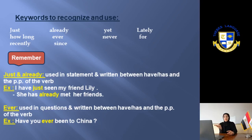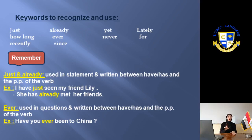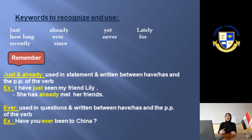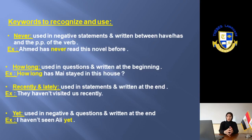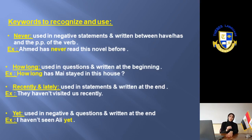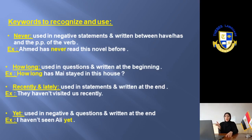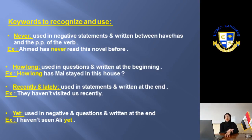The keyword 'ever' is used in questions and written between 'have'/'has' and the past participle of the verb. It only comes with the question form, as in the example: 'Have you ever been to China?' For the keyword 'never' — we already know this keyword means negative. I don't need to put 'not' with it; it's already a negative keyword. 'Never' is used in a negative statement.